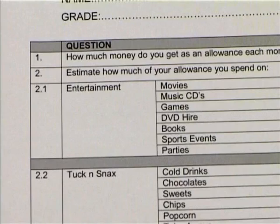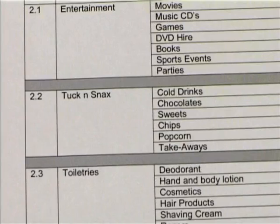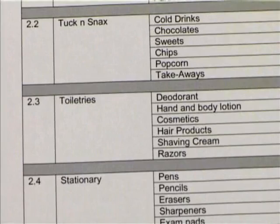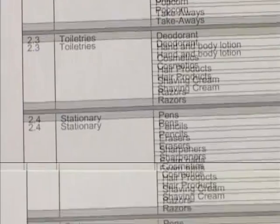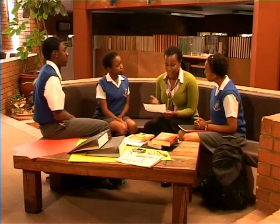For this part of the questionnaire, we want to know what learners spend their money on. We thought some learners may be getting more allowance because their parents expect them to buy more things. So we put together categories based on what we spend our money on. Entertainment includes movies, music CDs, games, DVD hire, books, sports events, and parties. The second category is tuck and snacks — cold drinks, chocolates, sweets, chips, popcorn, and takeaways like burgers and pizza. The third category is toiletries like deodorants, hand and body lotion, cosmetics, hair products, shaving cream, and razors. The fourth category is stationery, mainly for school: pens, pencils, erasers, sharpeners, exam pads, and books. The last category is savings and gifts.